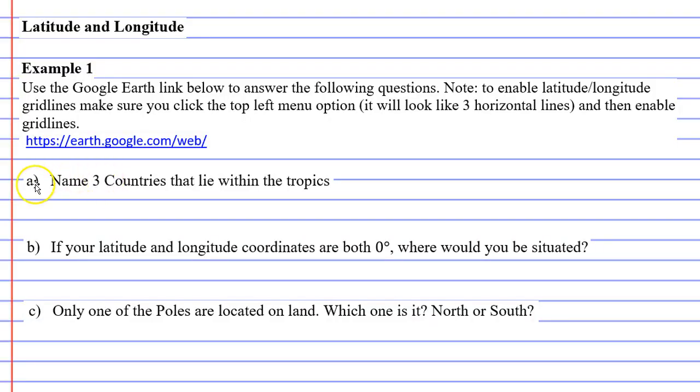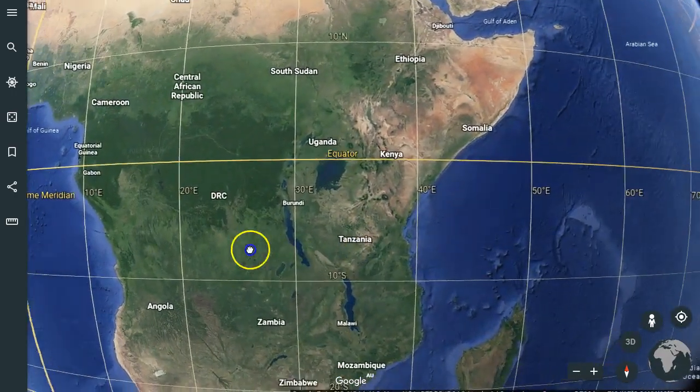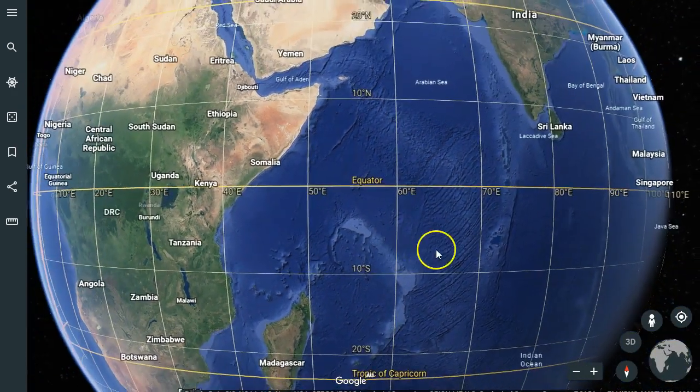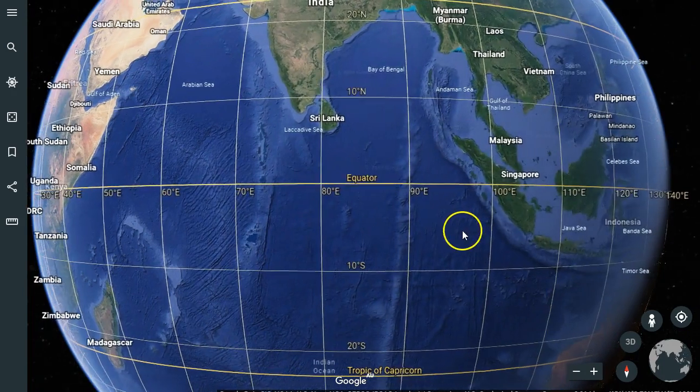Okay, so that's question A. I'm not going to write any down, that's up to you. Question B says if your latitude and longitude coordinates are both zero degrees, where would you be situated? So let's bring this up, zoom out. Zero degrees means it lies on the equator because the equator is zero degrees.